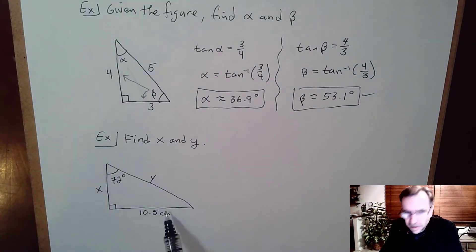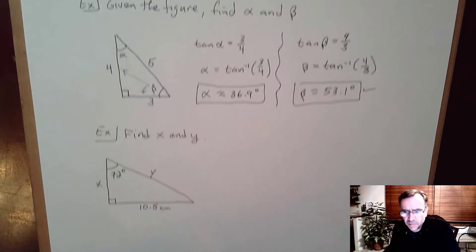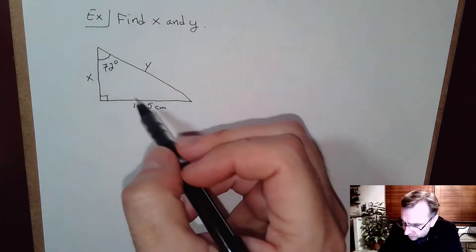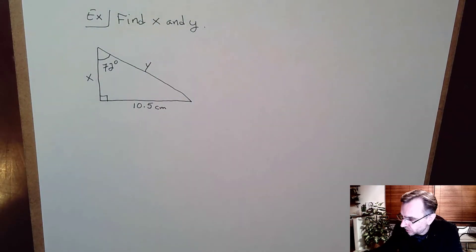So here we have a figure and they want us to find the sides this time, x and y, given one of the angles here at 72 degrees.